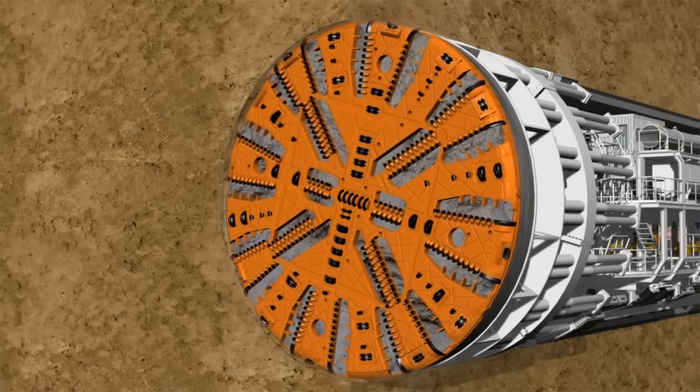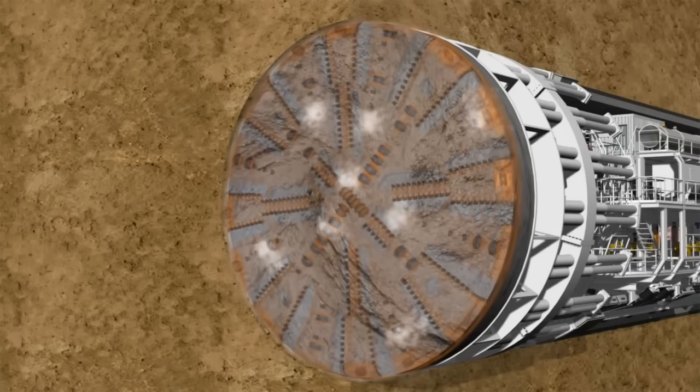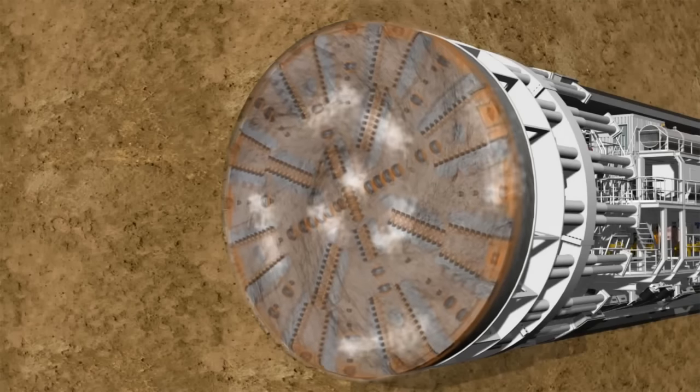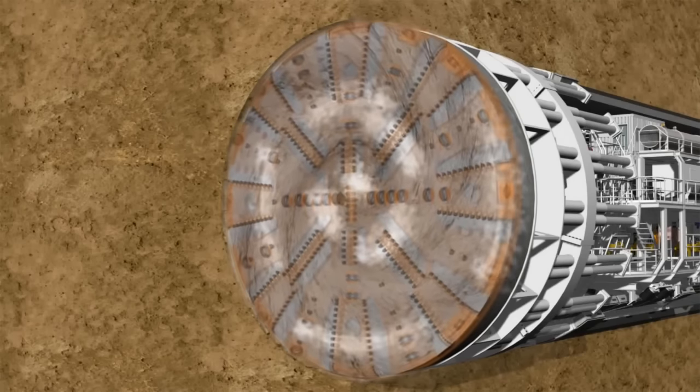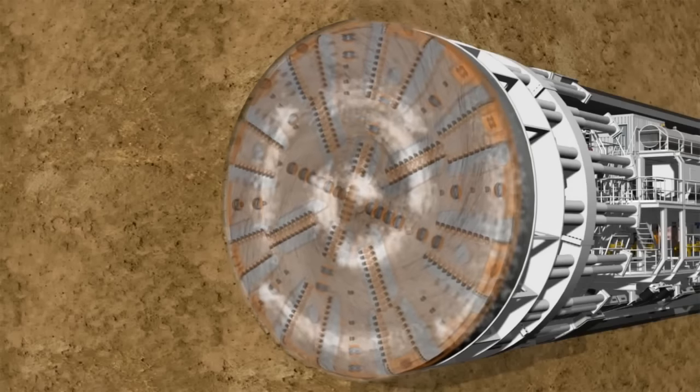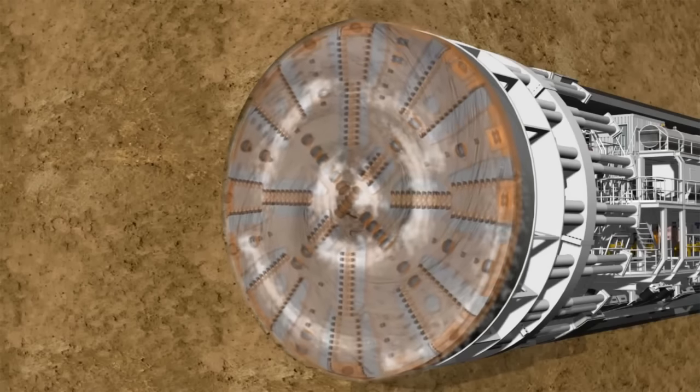If necessary, the soil can be conditioned with water, bentonite or foam using the injection systems located on the backup. With the help of nozzles integrated into the cutting wheel, the corresponding conditioning medium is injected into the soil, which is pressed into the excavation chamber by the existing earth and groundwater pressure.